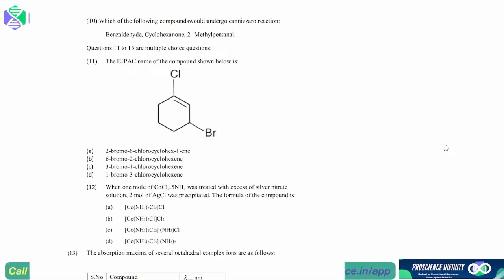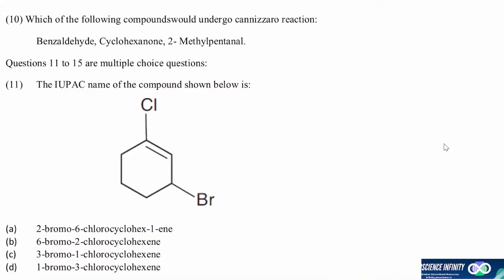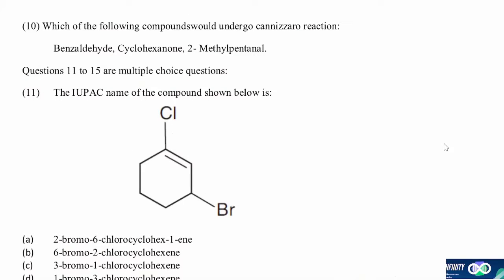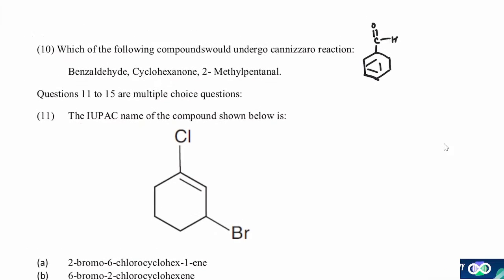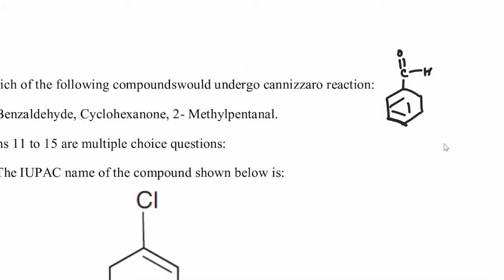Which one of the following compounds will undergo Cannizzaro reaction? We need to check whether any compound has alpha hydrogen or not. Benzaldehyde - if you remember, this is the alpha hydrogen. The alpha carbon has no hydrogen, so this will undergo Cannizzaro.